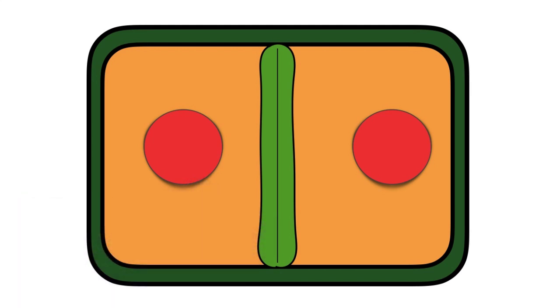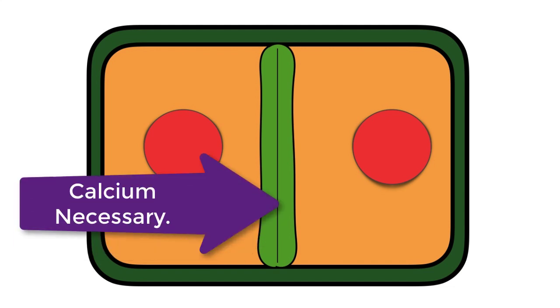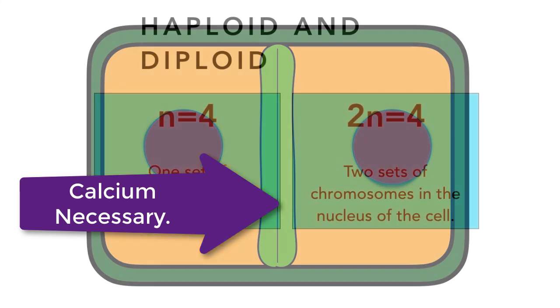Separating and supporting these newly formed cell walls is a structure known as the middle lamella, and it's one of the reasons why plants need calcium.